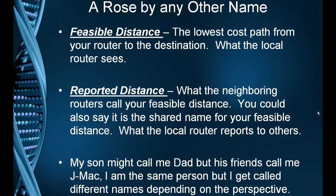Reported distance is what the neighboring routers refer to as your feasible distance. So after you find your feasible distance to R5, you would then report that to other routers. Your feasible distance gets reported to the other routers. So reported distance is the feasible distance of other routers, and feasible distance is your best distance to the destination. Really it's the exact same thing, but it depends on how you're looking at it.